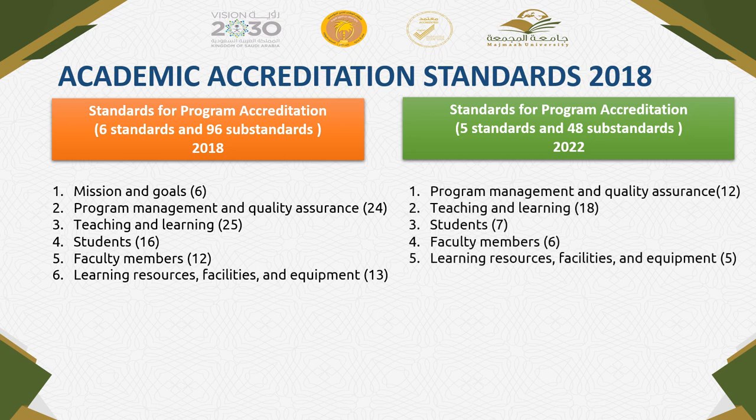This means the new standards are less complex, lighter, and will be easier to implement and to follow. The new five NCAAA standards: standard number one is program management and quality assurance with 12 criteria. I want to mention that the first standard — mission and goals — is not deleted, but it was included within program management and quality assurance.